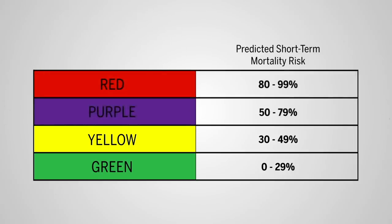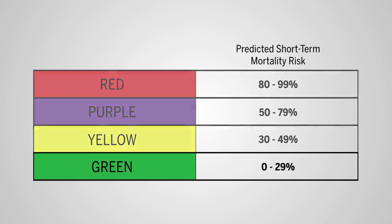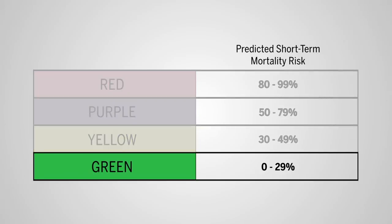In a level three triage scenario, patients who have a greater than 70% chance of surviving 12 months from the onset of critical illness should be prioritized. Priority groups include those with the color code of green.